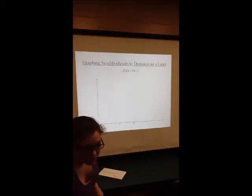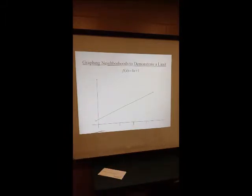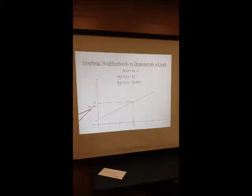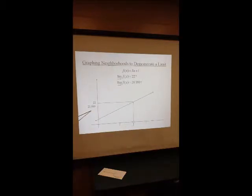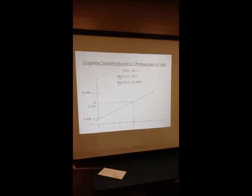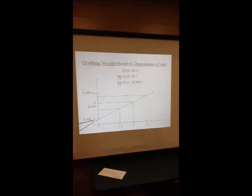We're going to demonstrate that 22 is the limit using the formal definition. For our linear function, x is approaching 7, so we mark that on the x-axis, which translates to 22 on the y-axis. Could 21.999 possibly be the limit? We mark 21.999 on the y-axis. In order for this to be the limit of f of x as x approaches 7, there must be a delta-neighborhood of 7 that maps into any epsilon-neighborhood of 21.999. We draw in an epsilon-neighborhood and a delta-neighborhood, and it fits perfectly into the epsilon-neighborhood of 21.999.